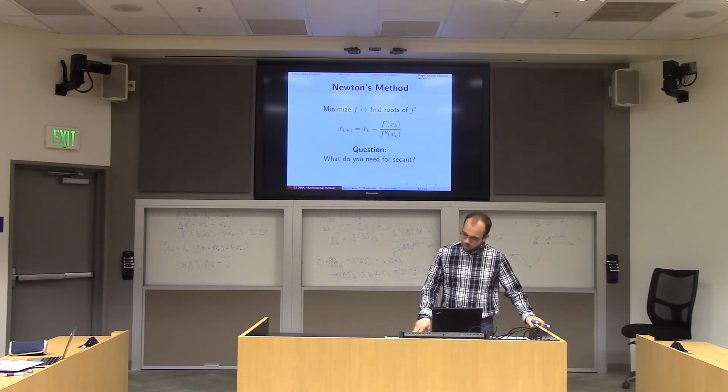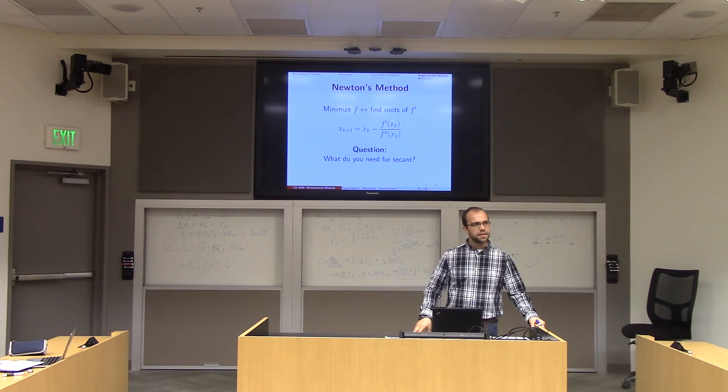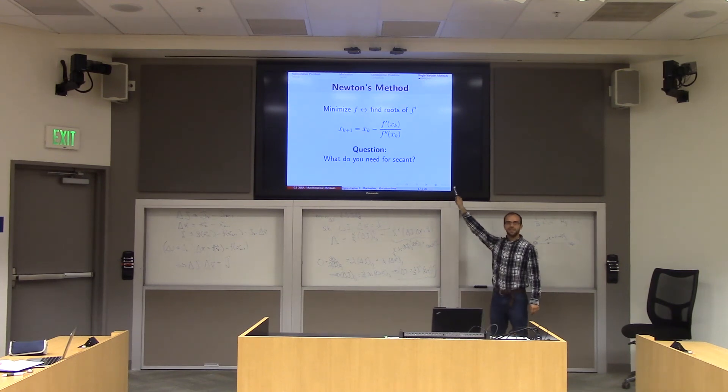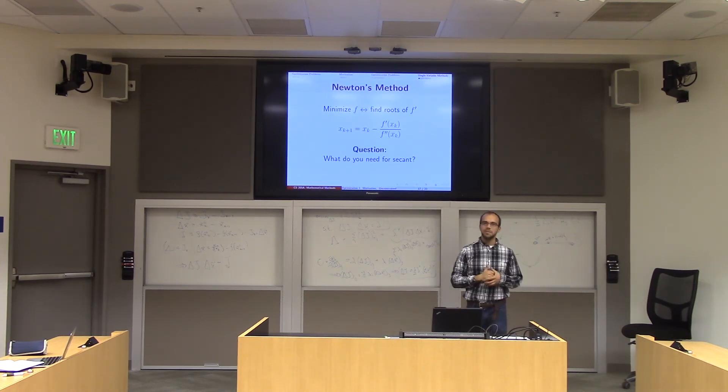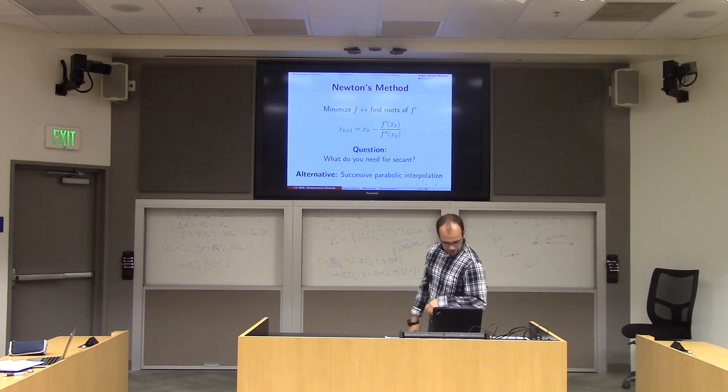Now, one question. So you could also run the secant method on f prime. But it's a little bit weird. The secant method would help me avoid having to evaluate f double prime. But I'd still have to evaluate f single prime. Because I'm trying to find roots of f prime. Does that make sense? So usually we don't use the secant method to find minima. Because somehow you're already having to differentiate once. You might as well do it twice.